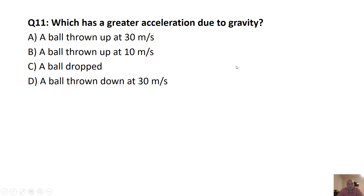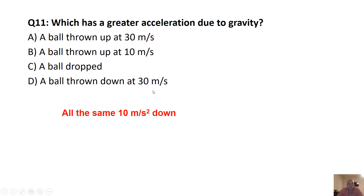Final question: which has a greater acceleration due to gravity — a ball thrown up at 30 m/s, a ball thrown up at 10 m/s, a ball dropped, or a ball thrown down at 30 m/s? The answer is they all have the same acceleration: 10 meters per second squared downward.